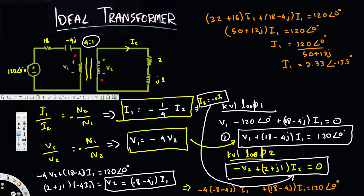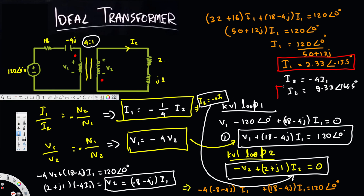We have solved for I1. Now we can find I2 using the relationship I2 equals negative 4 I1. Multiplying gives I2 equals 9.33 at 166.5 degrees.